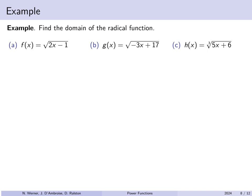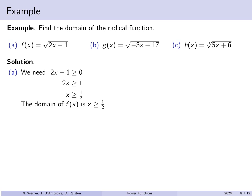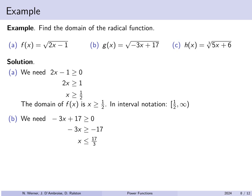Let's find the domain of some radical expressions. For f(x) = √(2x-1): since it's a square root, we need 2x - 1 ≥ 0, so x ≥ 1/2. The domain is [1/2, ∞). For g(x) = √(-3x+17): we need -3x + 17 ≥ 0, subtract 17 and divide by -3 — reversing the inequality — giving x ≤ 17/3. The domain is (-∞, 17/3].